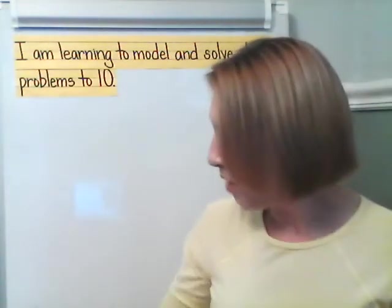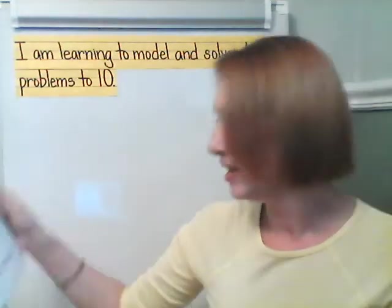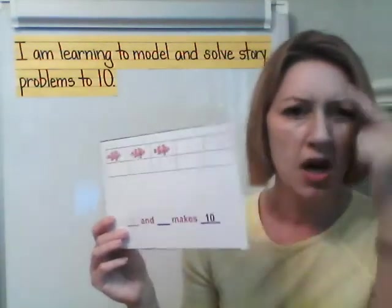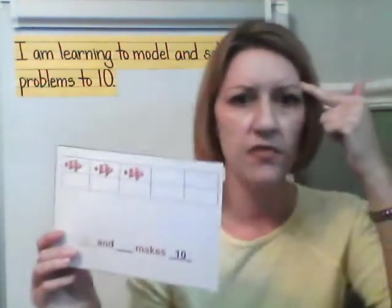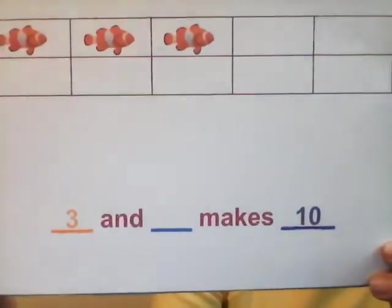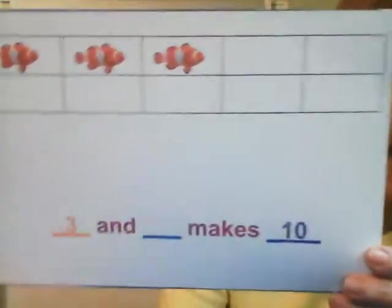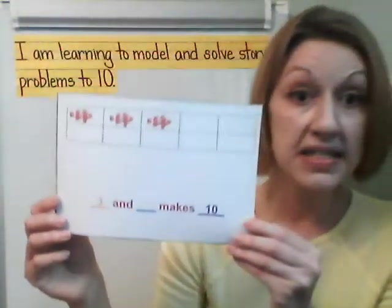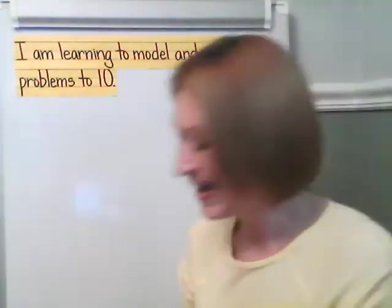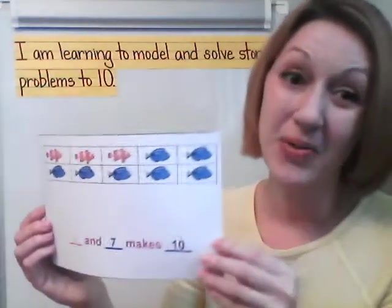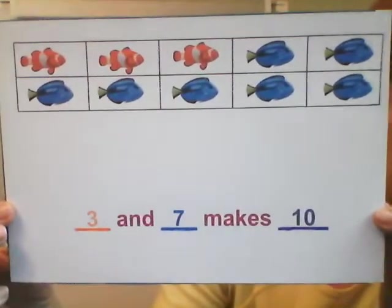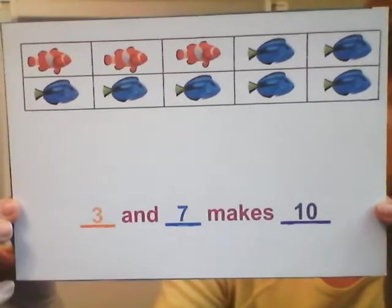What else makes 10? What if we had three orange fish? I wonder how many blue fish there would be if there are 10 fish altogether. I have my three orange — three and blank makes 10. How many spaces do you see? Count with me: one, two, three, four, five, six, seven spaces. Did you think three and seven makes 10? You are right — kiss your brain! Three orange fish and seven blue fish make 10.